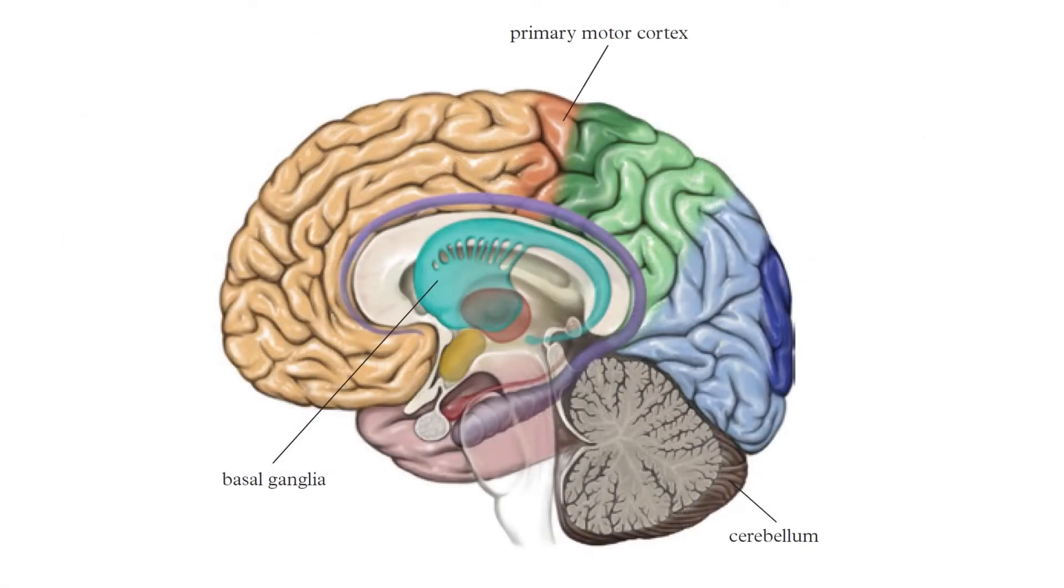In the previous lesson, we saw that motor control primarily happens up here in the motor cortex, but there are two other areas of the brain that also play important parts, the basal ganglia and the cerebellum.